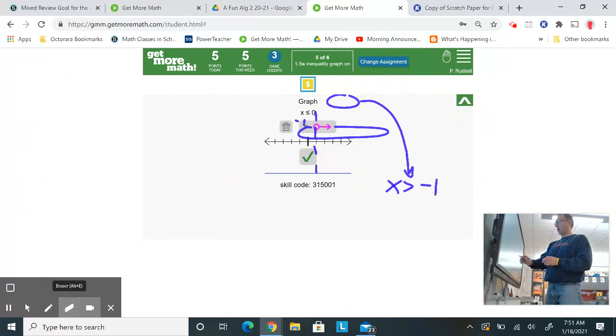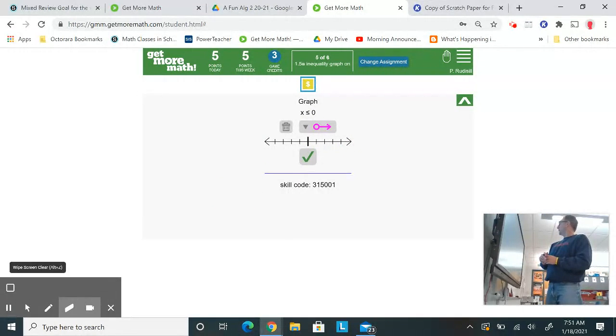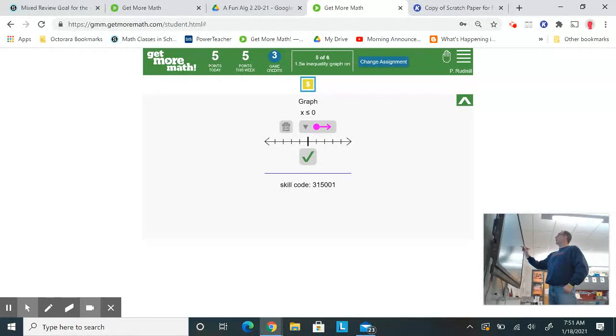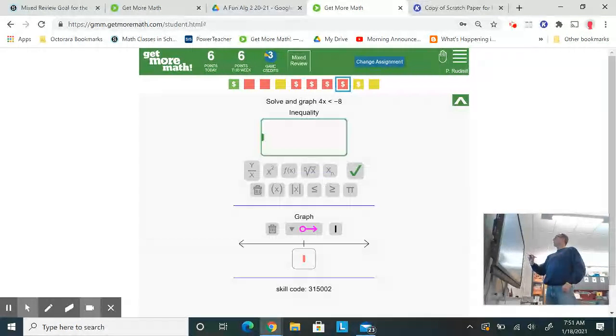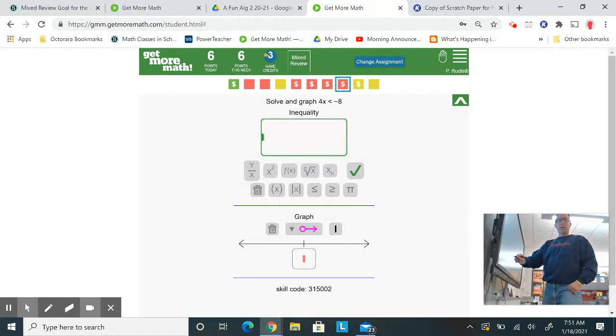And we'll finish up with this 6th problem. All the numbers less than or equal to 0. So it includes equal to. So I change to my solid dot. I want 0. And I want all the numbers that are less. So it could be equal to or it could be less. Less is to the left. All right. Good luck with those.